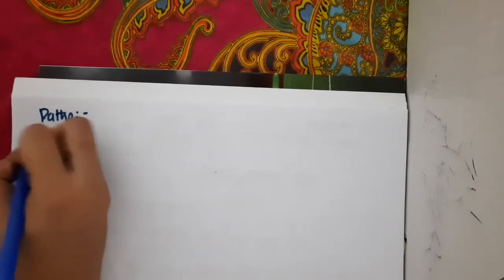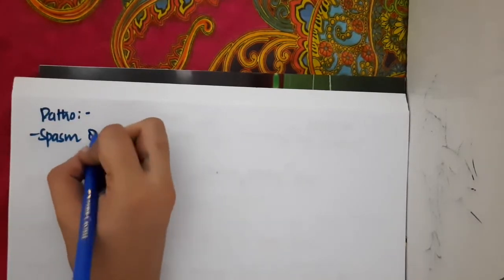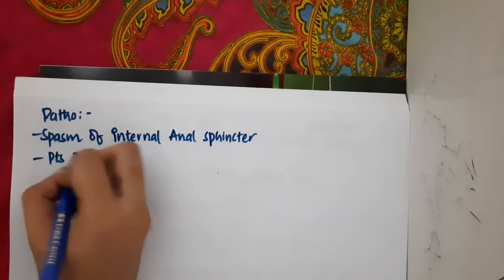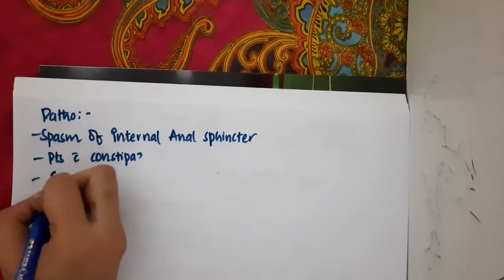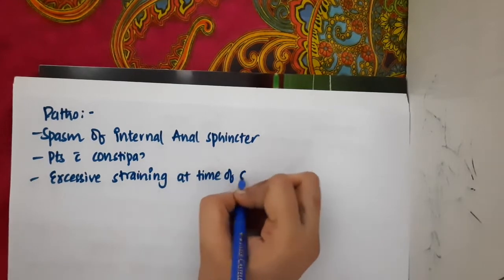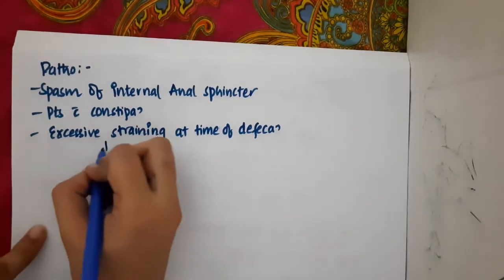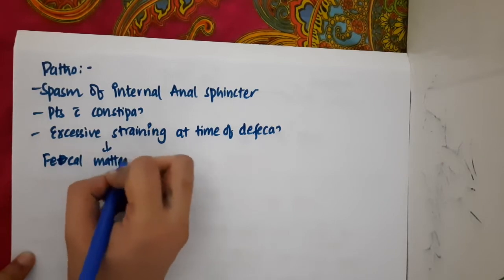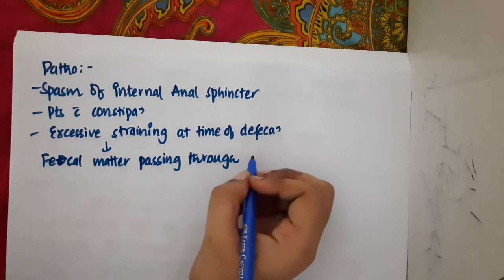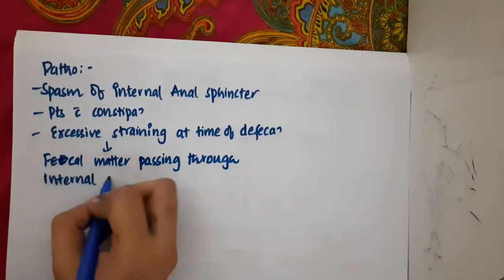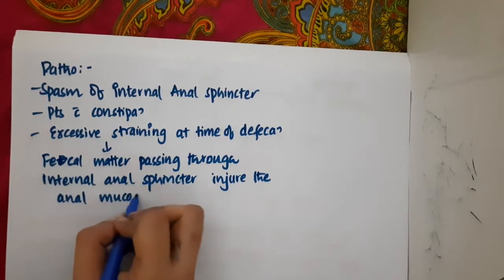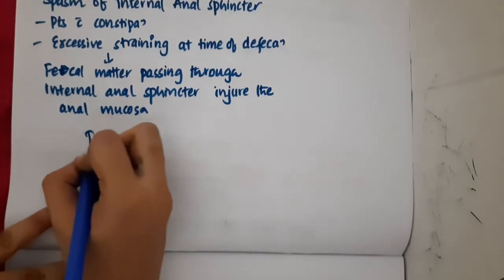Now regarding pathology — why does fissure in ano occur? The longitudinal split in the anoderm can occur due to spasm of the internal anal sphincter. It also occurs in patients with constipation or excessive straining at the time of defecation. When there is excessive straining, fecal matter passing through the internal anal sphincter can cause injury to the anal mucosa, causing the fissure in ano.